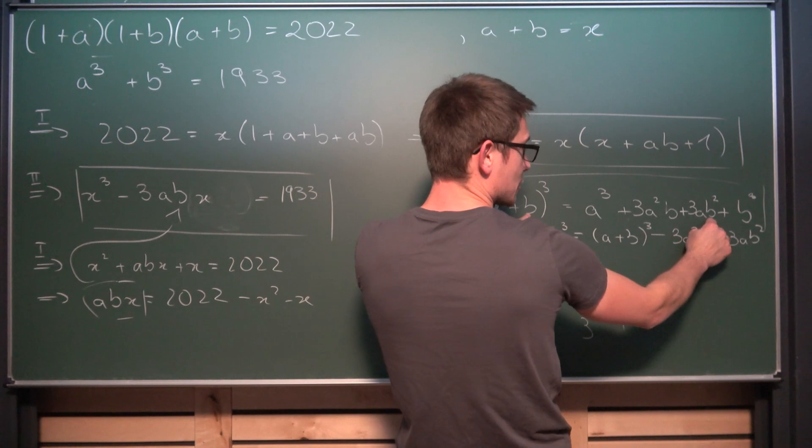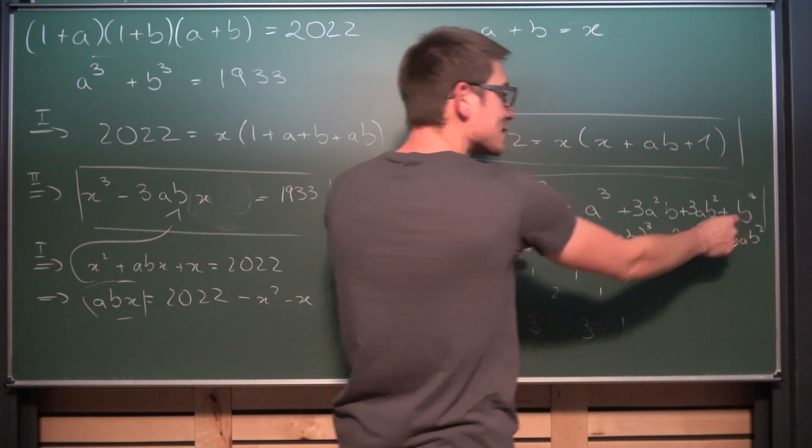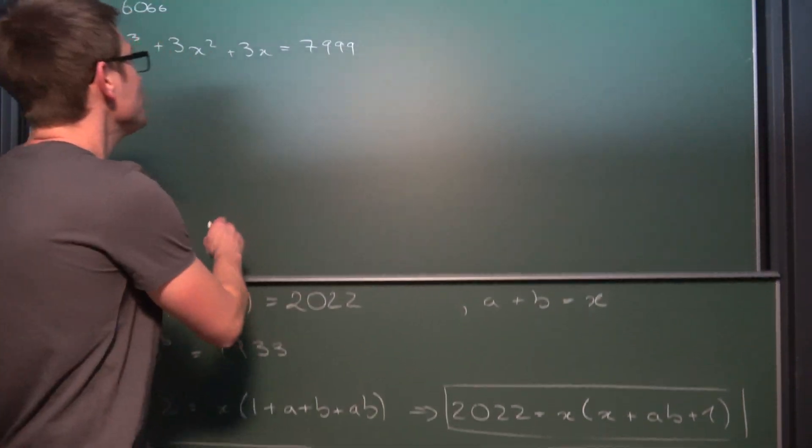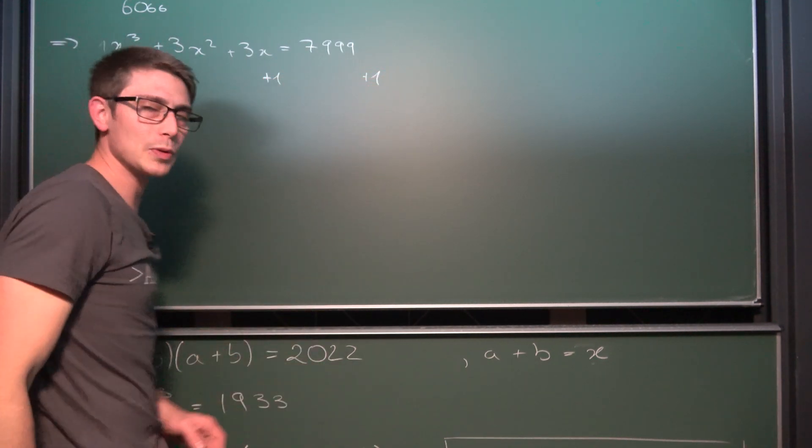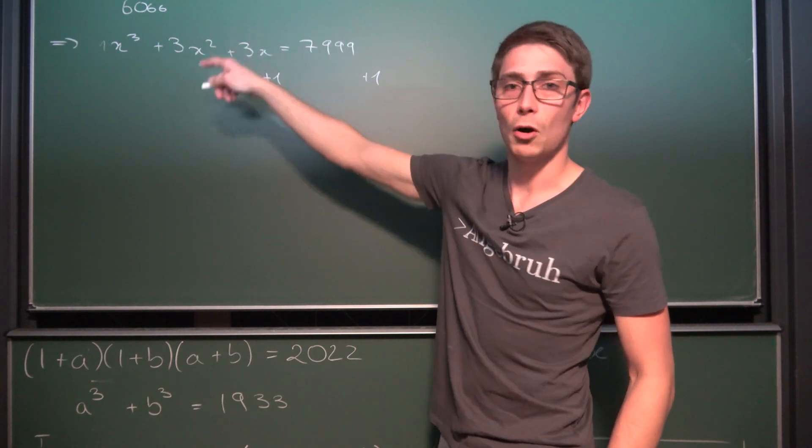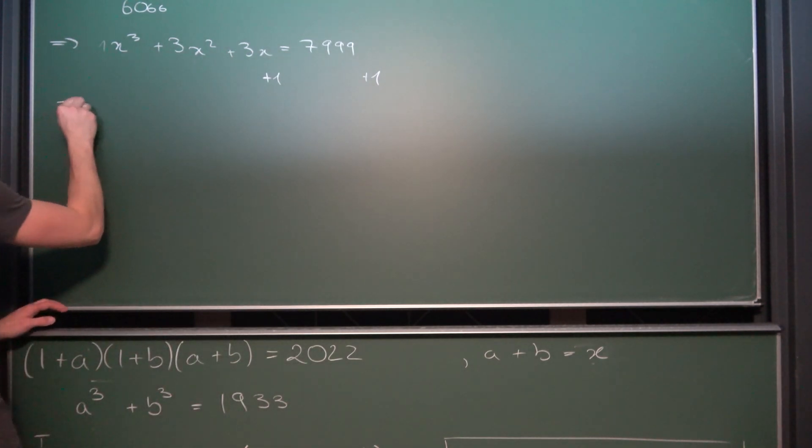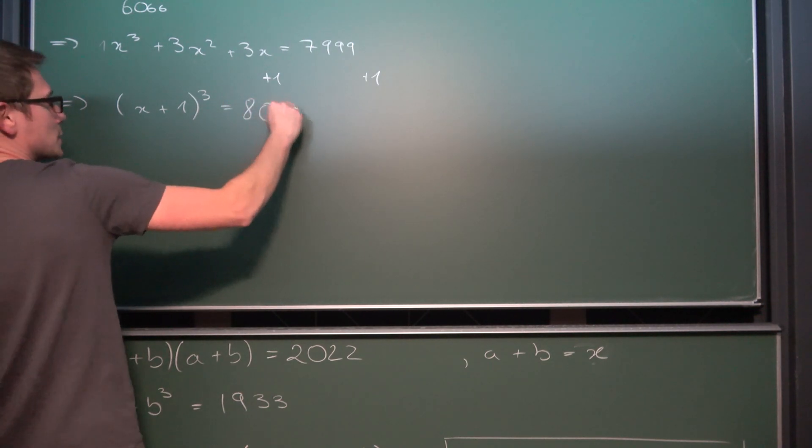b squared is going to be 1. So 3x. The only thing that's missing is plus 1 to the third power which is the same as 1. So if we were to add a 1 on both sides we would end up with an easy binomial on the left hand side and just 8000 on the other side.